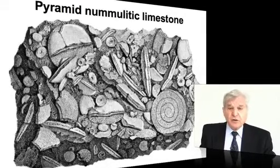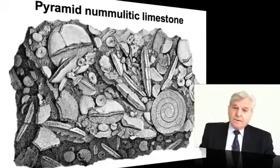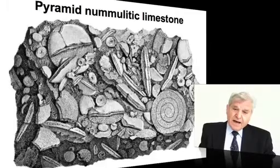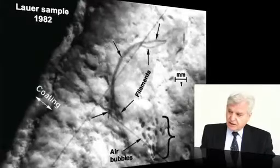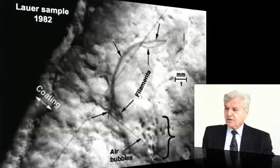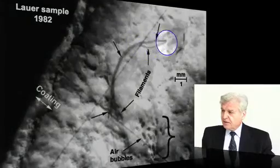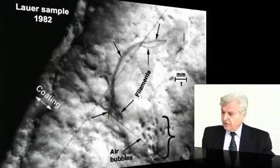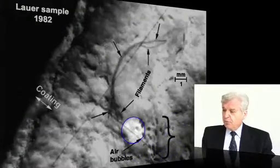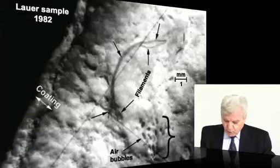If you don't look at the geological glue very precisely, you'll see nothing. At the beginning, I had to study some stones — some genuine stones — and I discovered in this lower sample here the presence of strange artifacts that I called filaments. And then we have a lot of air bubbles. This is a stone that is covered with a synthetic coating.